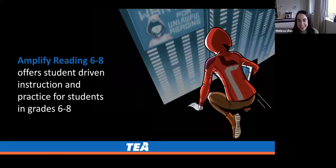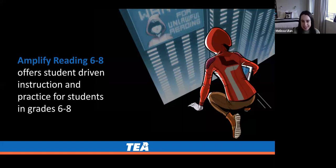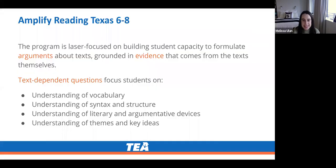I'm really excited to share Amplify Reading Texas 6-8 with you today. The program teaches students to find deeper meaning in texts by questioning everything they read. From literary classics to in-world propaganda, great speeches to scientific articles, students learn to analyze the moves authors make to achieve their purposes. The analytical reading skills students hone can be used to read and understand any kind of complex text. Students conduct sustained, thoughtful, and critical analysis of text, focusing on specific details and patterns in order to understand an author's meaning. The program's goal is for students to formulate arguments about text grounded in evidence that comes from the texts themselves.